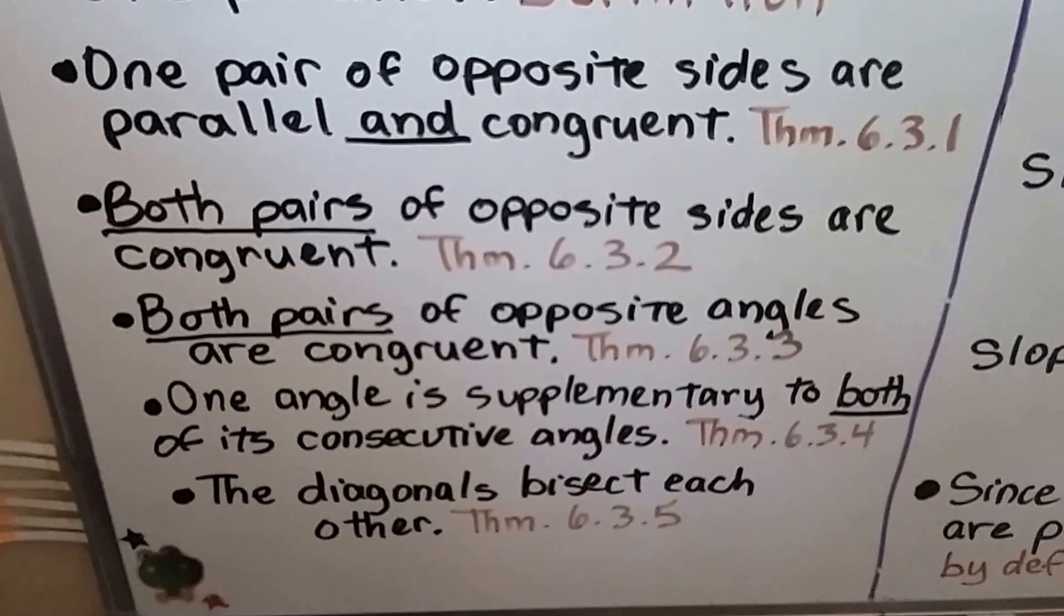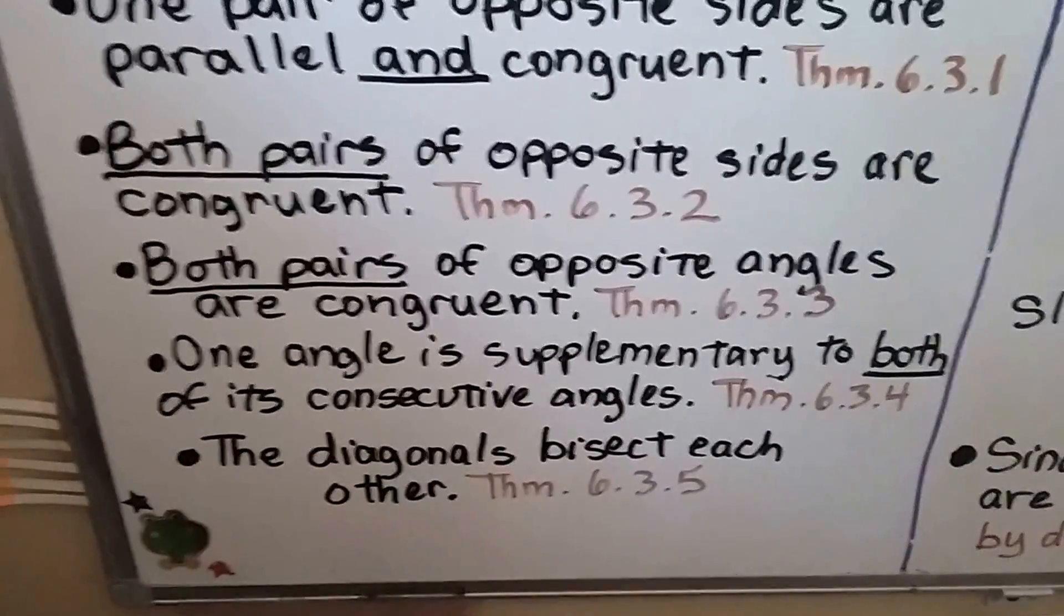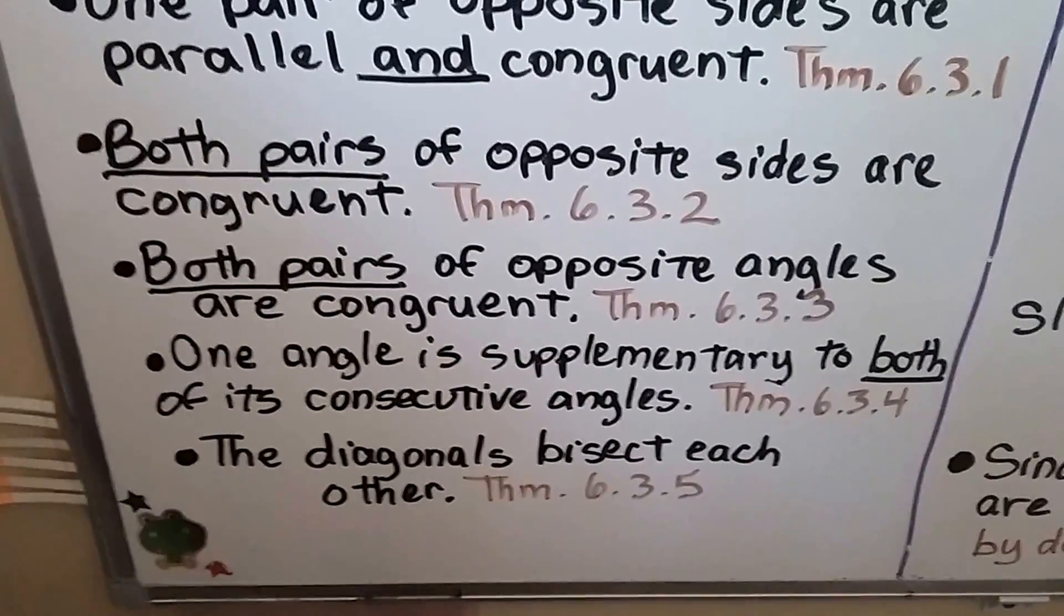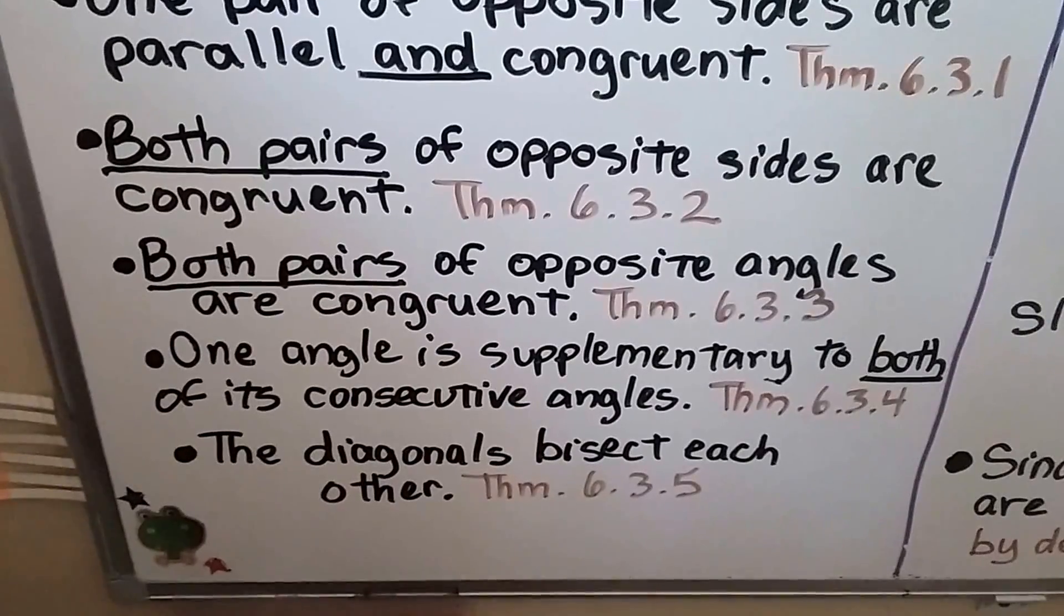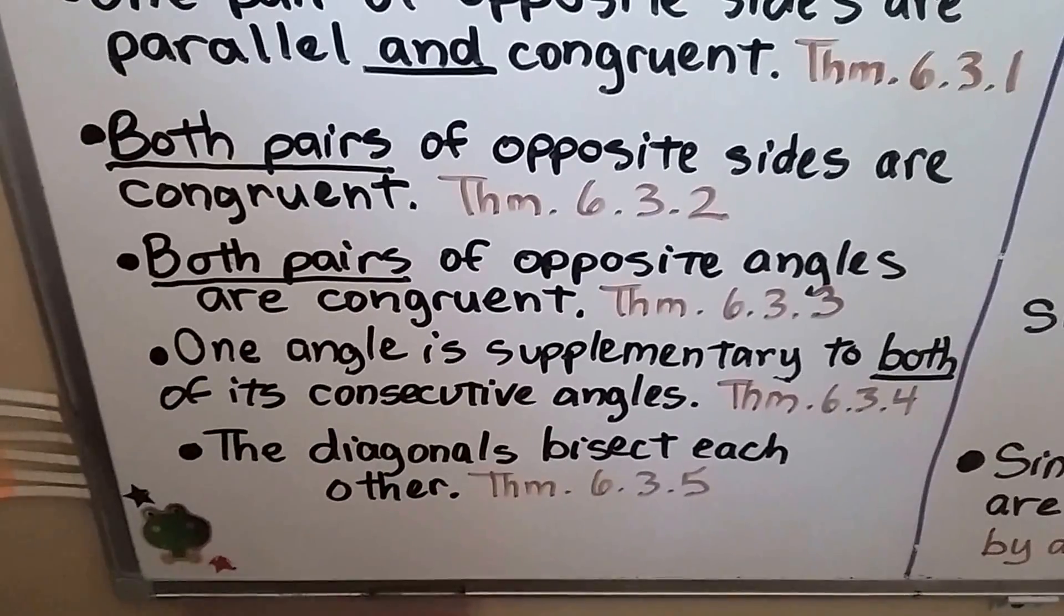Both pairs of opposite sides are congruent—that was from the second theorem. Both pairs of opposite angles are congruent—that was from the third theorem. And one angle is supplementary to both of its consecutive angles—that was the fourth theorem.